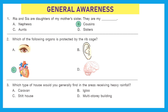For areas with heavy rainfall, we generally see stilt houses because they are far above the ground and protect us from floods or excess water coming inside our house. The right answer is option C.